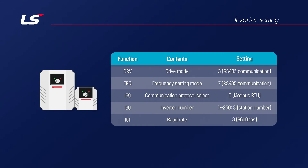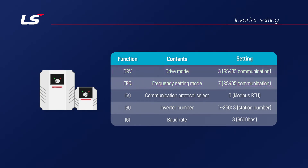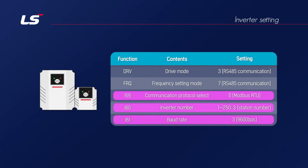The basic settings to control the reference frequency and run command of the drive are as follows: run command DRV 3, reference frequency FRQ 7. Also, you could change communication protocol I-59, station number I-60, load rate I-61, assigned to I-group I-59, I-60, I-61.